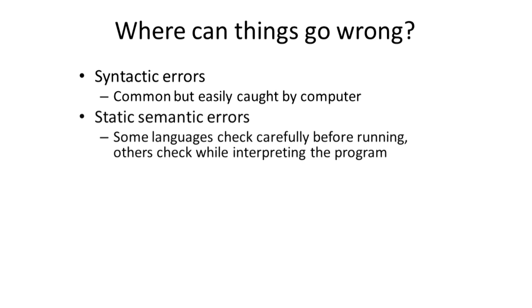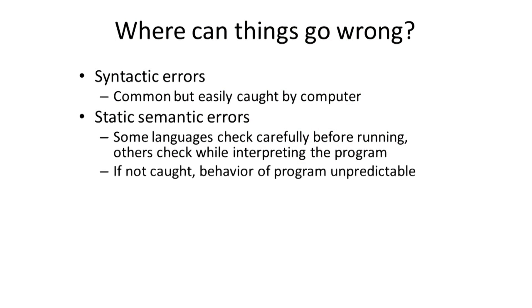Static semantic errors also occur. Some languages carefully check ahead of time to catch these before running the program — in compiled languages, the system works hard to catch errors before execution. In interpreted languages like Python, the interpreter walks through executing the program and on the fly tries to spot static semantic errors. One downside is it can be harder to debug, because you only reach the error when it occurs and must work backwards to find the cause.